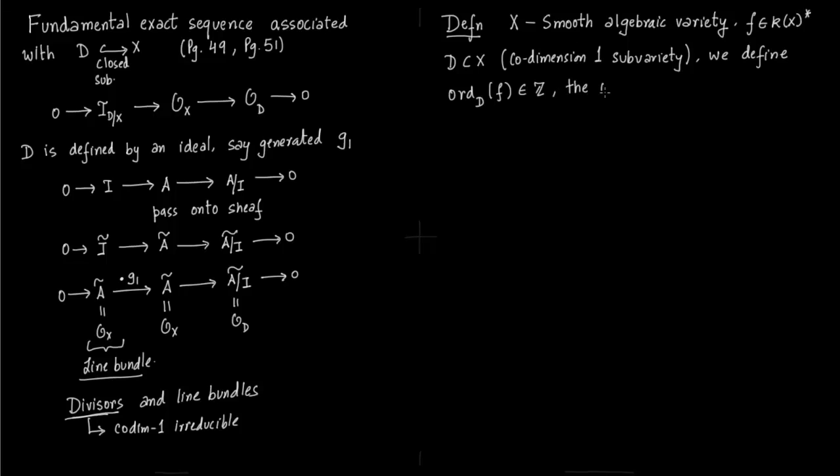The order of zeros of f along D. To do so, you first fix point x in this smooth algebraic variety X. First write f as g1^n1. You just factorize it, and each of these factors g_i are irreducible, then you have the unit in the end. u is the unit of the local ring.